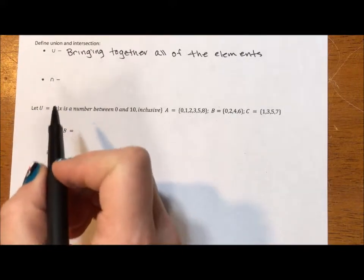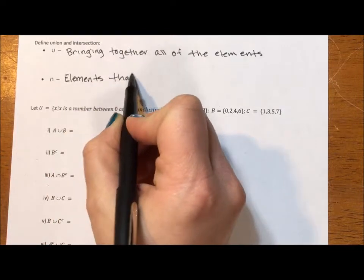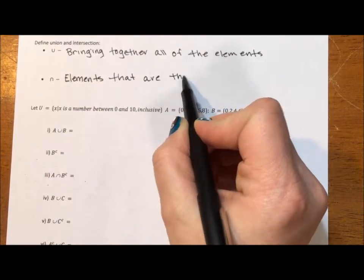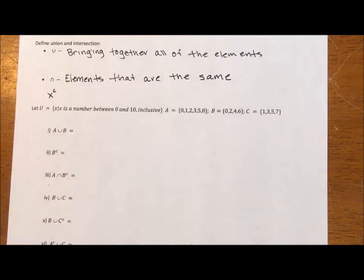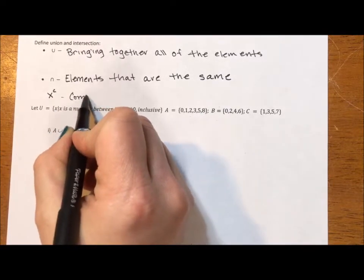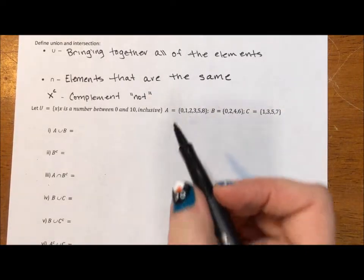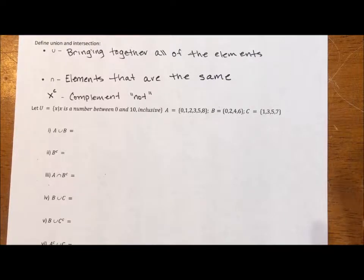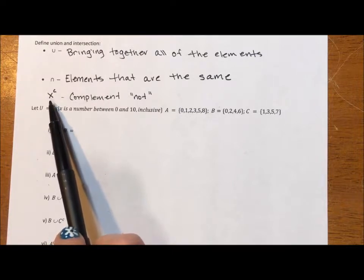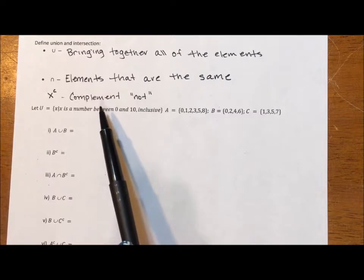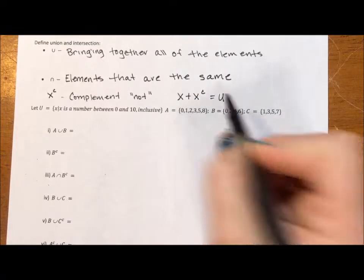Intersection, that's what this little symbol means. It looks like an N, whereas that looks like a U. Intersection is elements that are the same. The last thing is a little C up there. That means complement. I sometimes think of it as not. So if the universe was all the people on planet Earth, and our set X was all of the people in a union, any union, the complement is everybody not in the union. The set plus its complement should be the entire universe as defined.